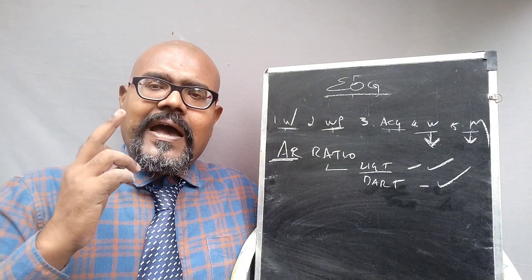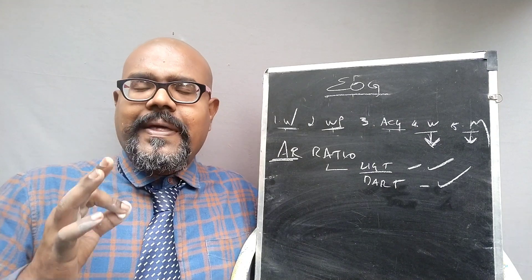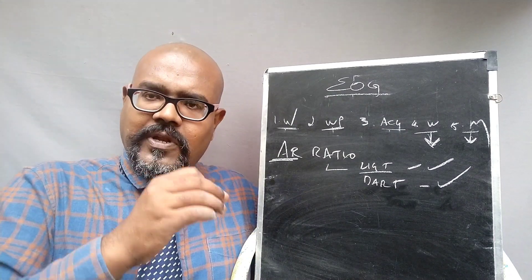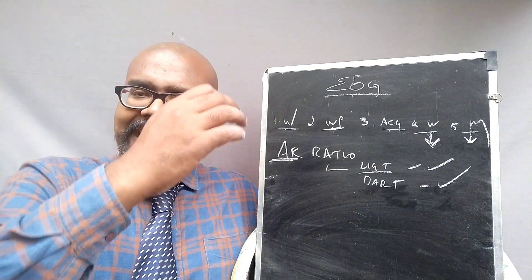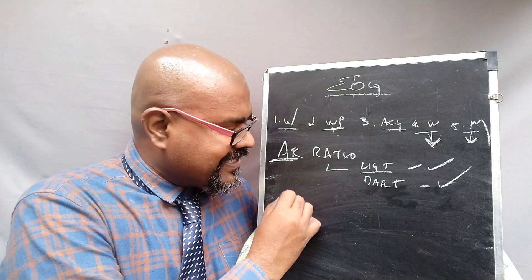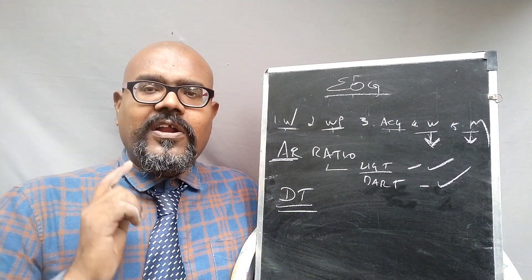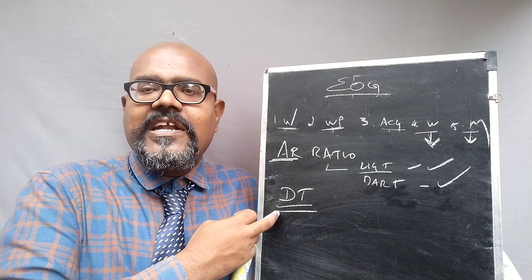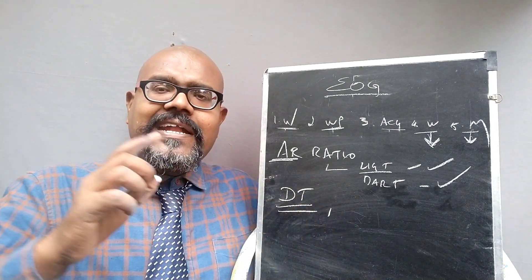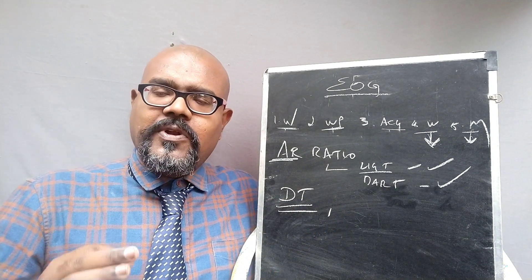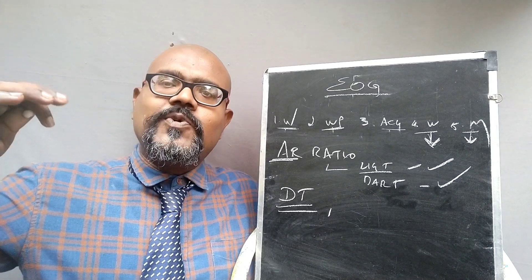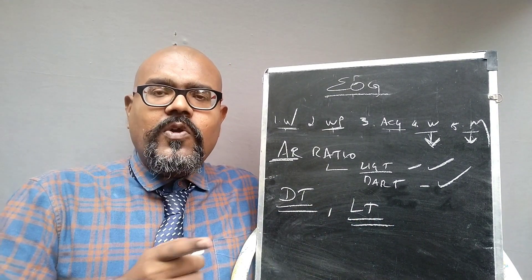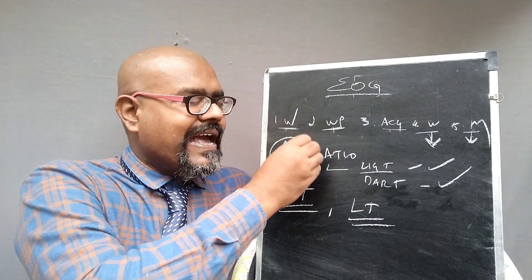If you want to assess the pigmental epithelium condition, the patient is supposed to sit in the dark. During the dark time, the resting potential of the patient slightly decreases — that is called the dark trough. Once the light is switched on, the resting potential gradually increases — that is called the light trough. The ratio between these gives us the Arden ratio.